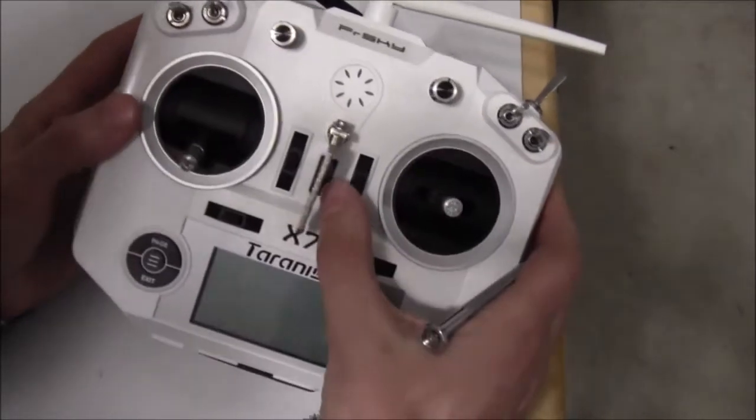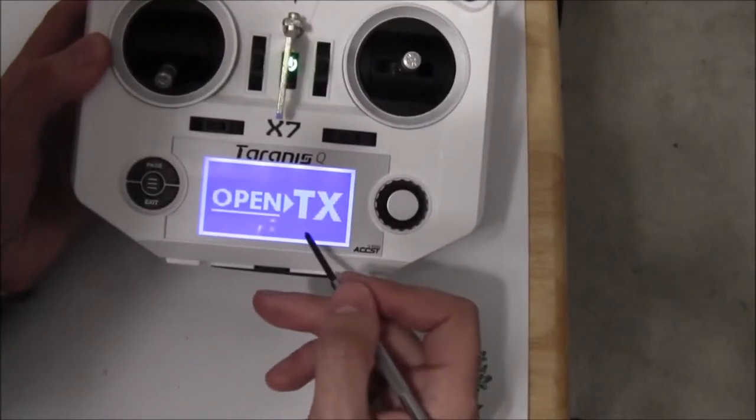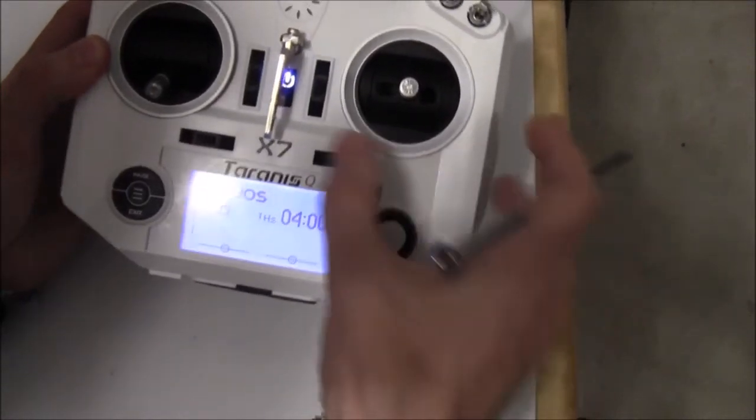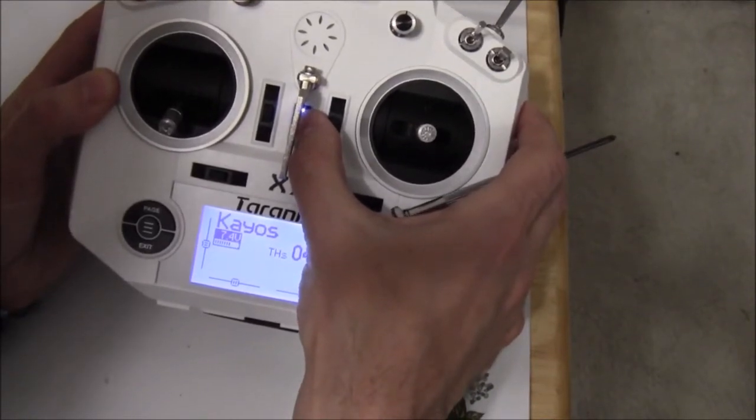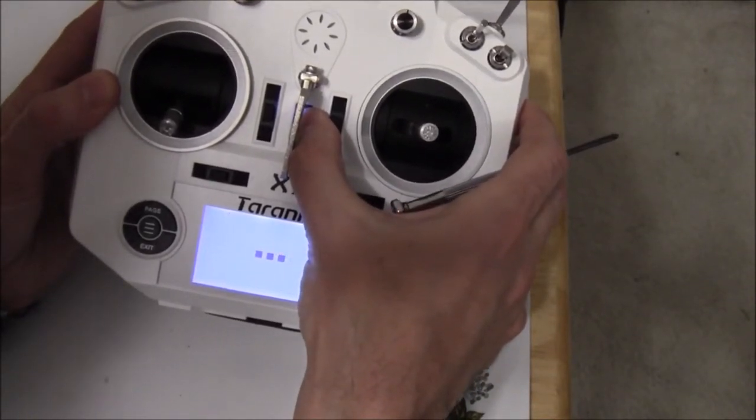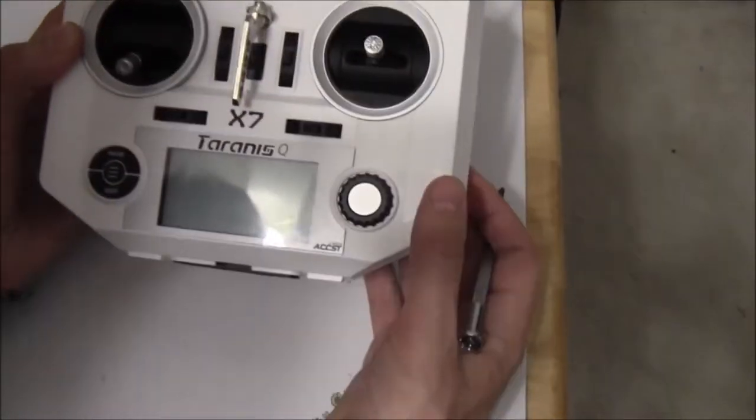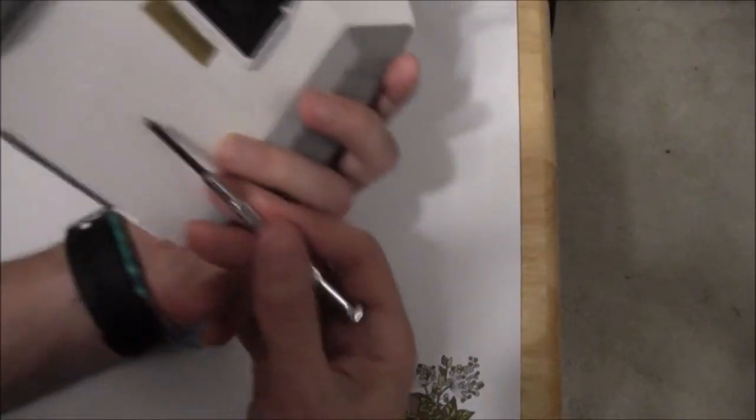Alright, so first off when I turned it on, it froze right here and it didn't even say anything. It was still showing the splash screen, and then when I tried to turn it off using this button, it wouldn't turn off. It just kept displaying the splash screen. The only way I got it to turn off was to take out the batteries.